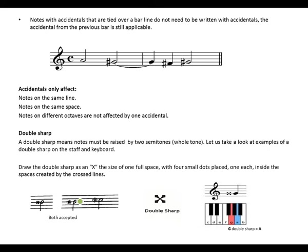Notes with accidentals that are tied over a bar line do not need to be written with accidentals again — the accidental from the previous bar is still applicable. For example, a G sharp tied over the bar line will also affect the next G sharp, since it is tied to the next bar.